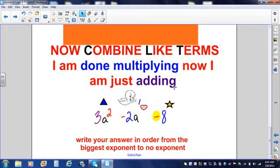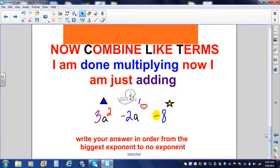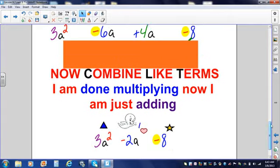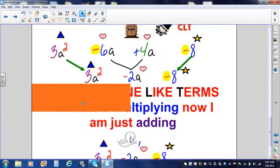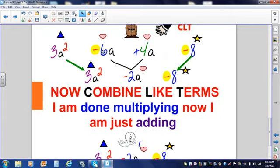Remember that we're done multiplying. Now, we're just adding. We're done multiplying. Now, we're just adding. I can combine my hearts right here. A negative 6 and a positive 4 gives me negative 2. My variable A is like the dog that follows me everywhere I go.